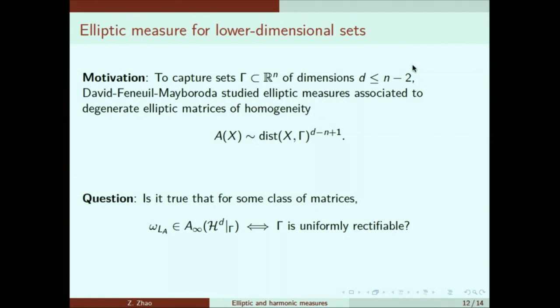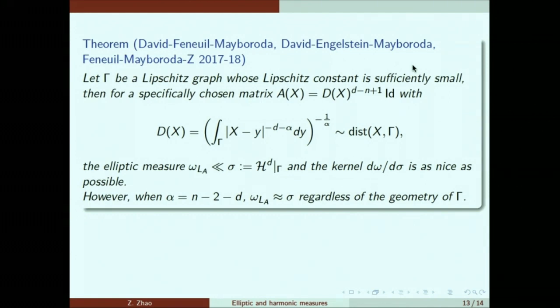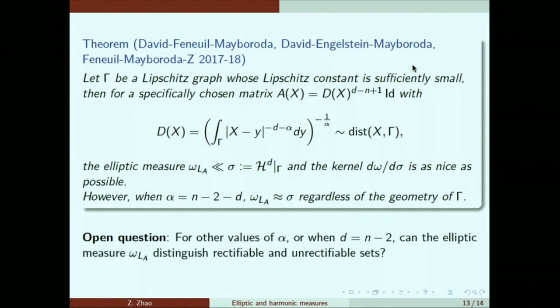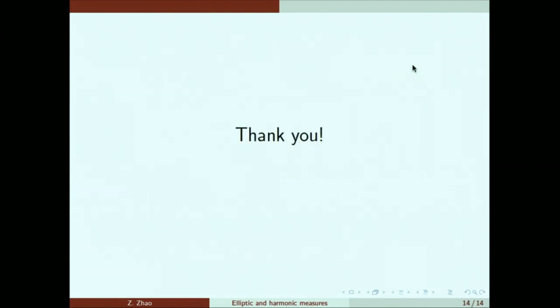We want to know, is it true that for some class of operators satisfying this homogeneity, the nice behavior of the elliptic measure corresponds to the rectifiability of the boundary? We have some partial results in this direction. However, it was also realized that for a very specifically chosen matrix, in fact, no matter how bad the geometry of the boundary is, the behavior of the elliptic measure is always very nice. So in some sense, this choice of elliptic matrix mollifies out the singularity of the boundary. So we want to understand, is there any better way of choosing this matrix so that it doesn't blur out the fine structure of the boundary set, so that we can still capture the structure of the boundary set? With that, I end my talk and thank you everyone.